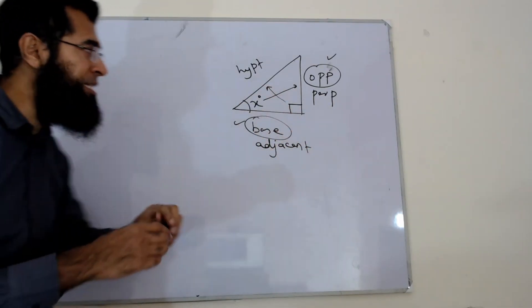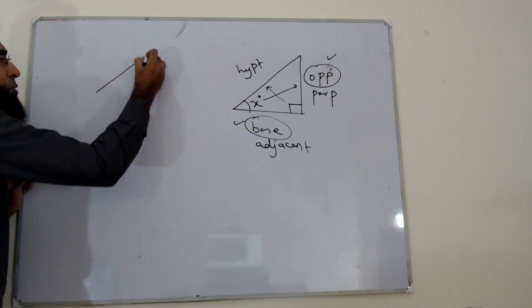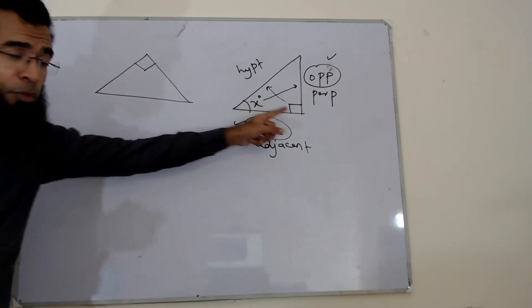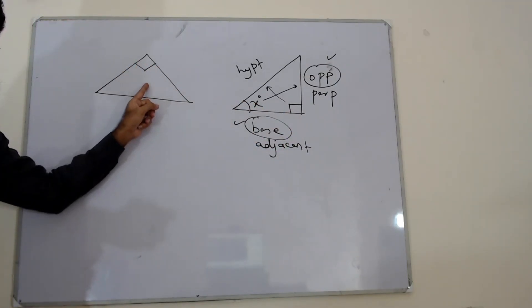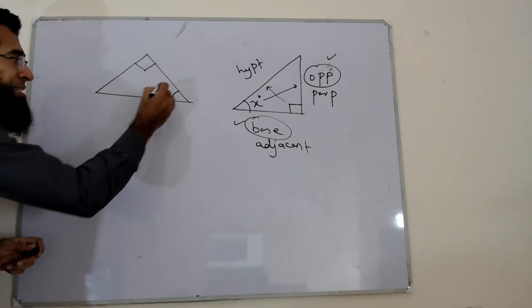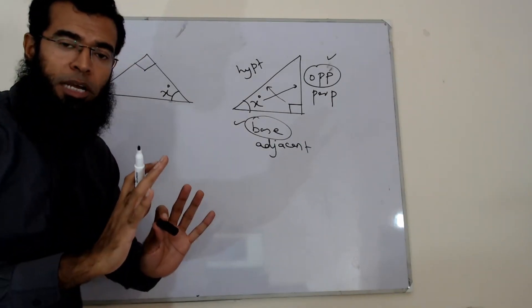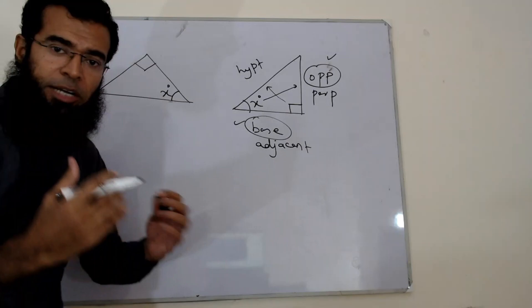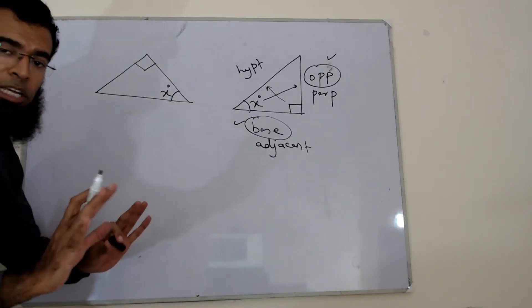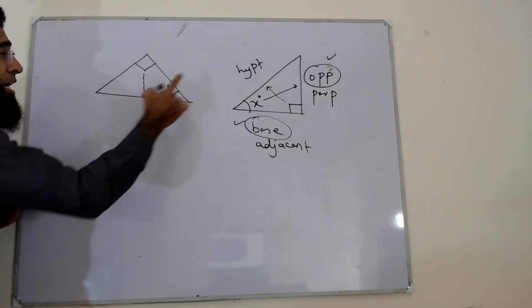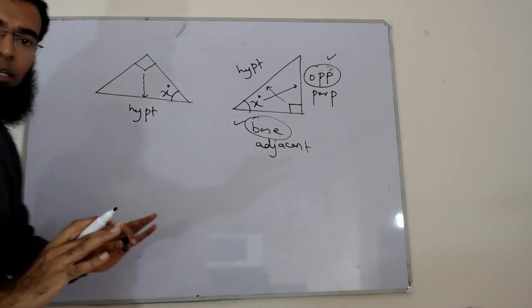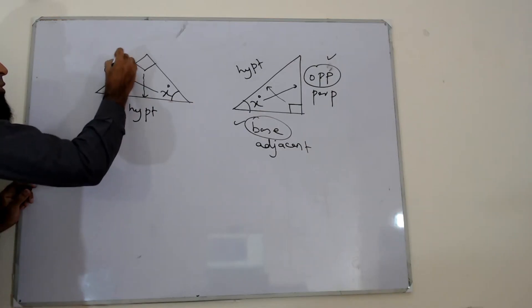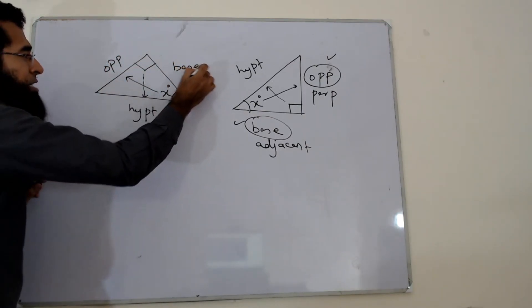Let's take another example. We have a triangle marked with 90 degrees, so it's a right angle triangle. Let's say angle x degrees is also marked. The first thing is to label the sides — you need clarity on which side is which: which is adjacent or base, which is opposite, which is hypotenuse. The first side to label is the one you have no doubt about: 90 degrees ki jo side hai opposite — that is the hypotenuse. Then angle ke saamne wali side is opposite, and the remaining side is the base.